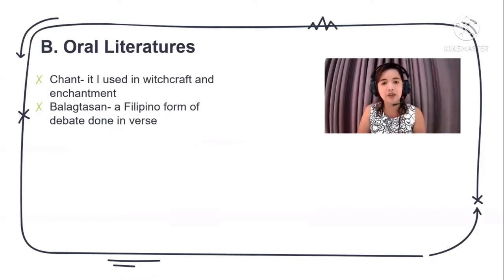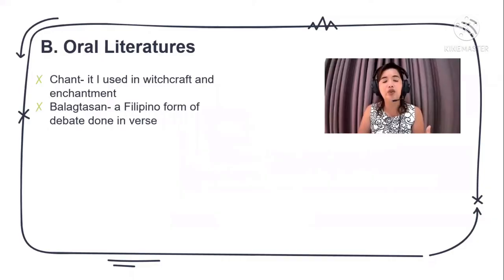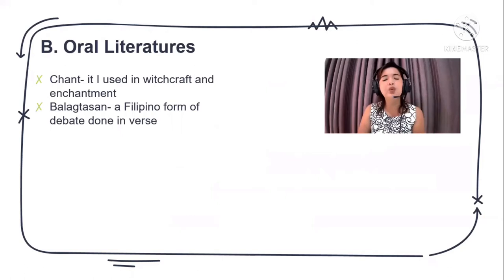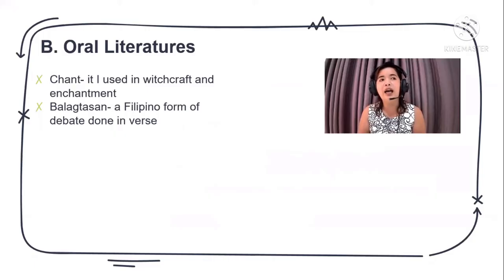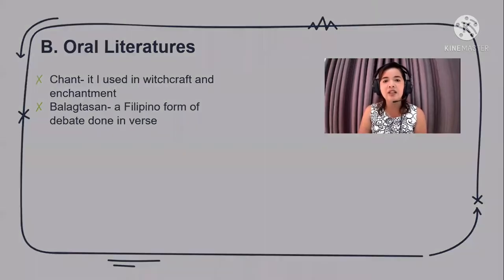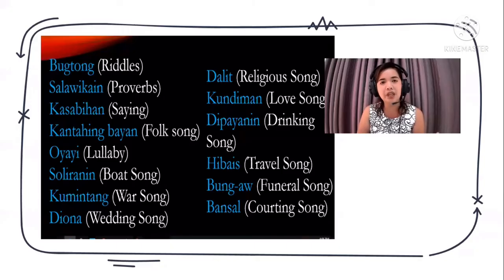Oral literature is basically literature that is spoken or through sounds. Examples include chants and balagtasan. Chants are songs used in witchcraft or enchantments — songs associated with supernatural beings. Balagtasan is a Filipino form of debate done in verses, very familiar especially during Buwan ng Wika in August. Other examples of pre-colonial literature include bugtong, salawikain, kasabihan, kantahing bayan, uyayi, suliranin, komintan, dalit, kondiman, and bansal.